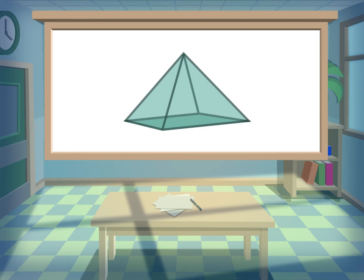3D shapes may have vertices. A vertex is where two or more edges meet. For example, this pyramid has five vertices. 1, 2, 3, 4, 5.